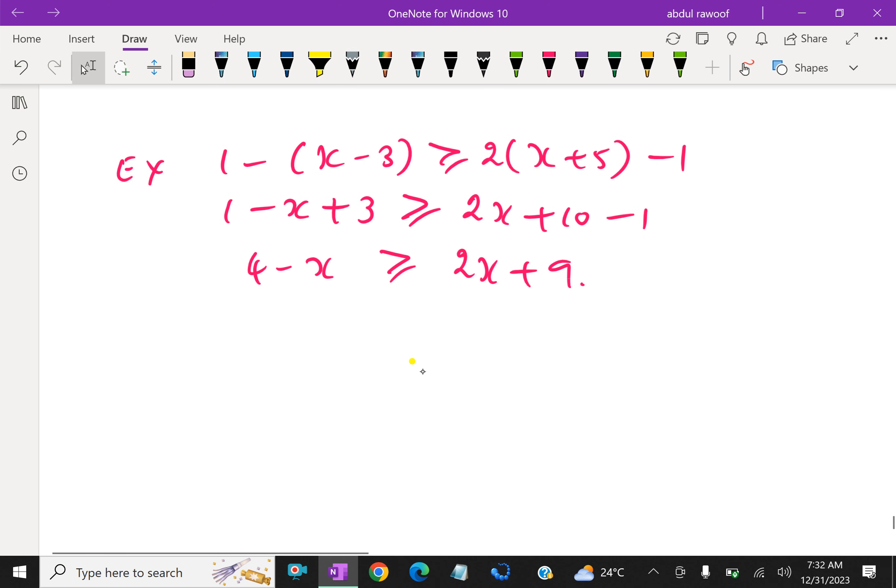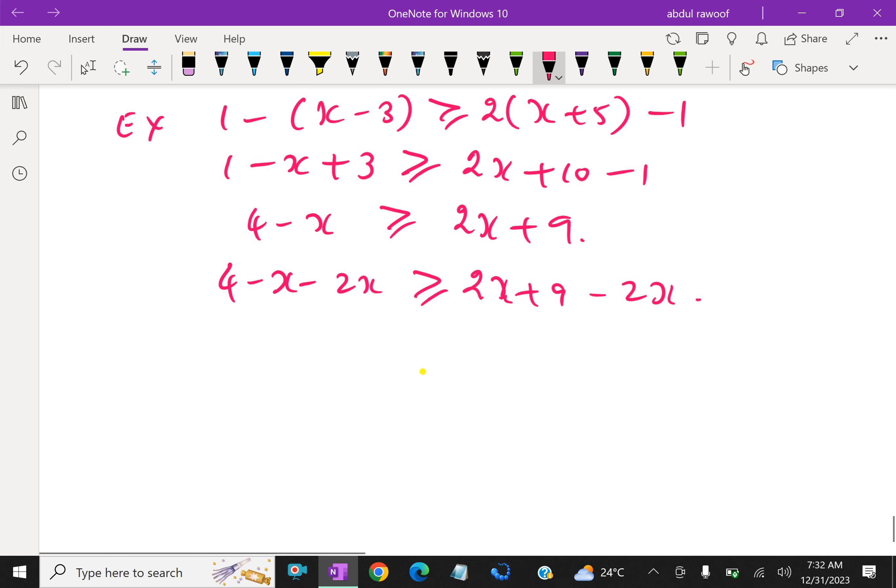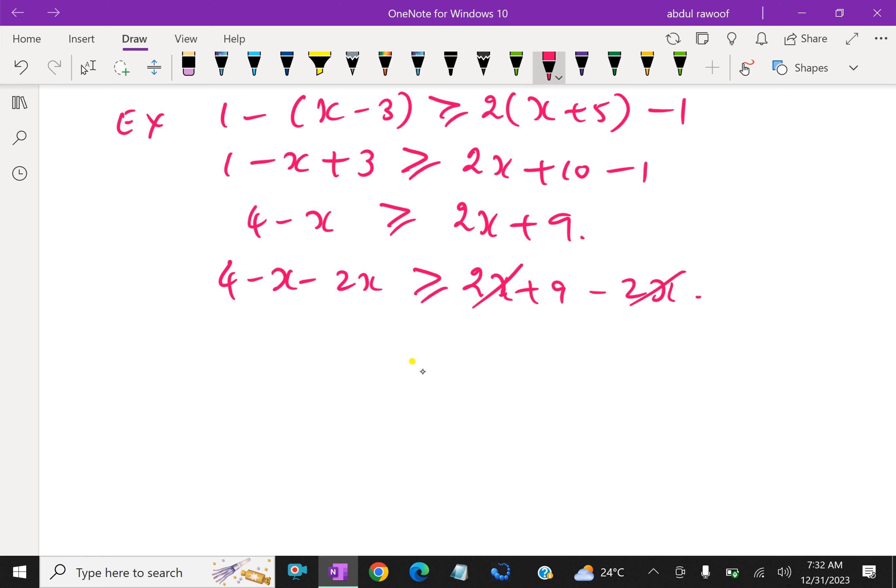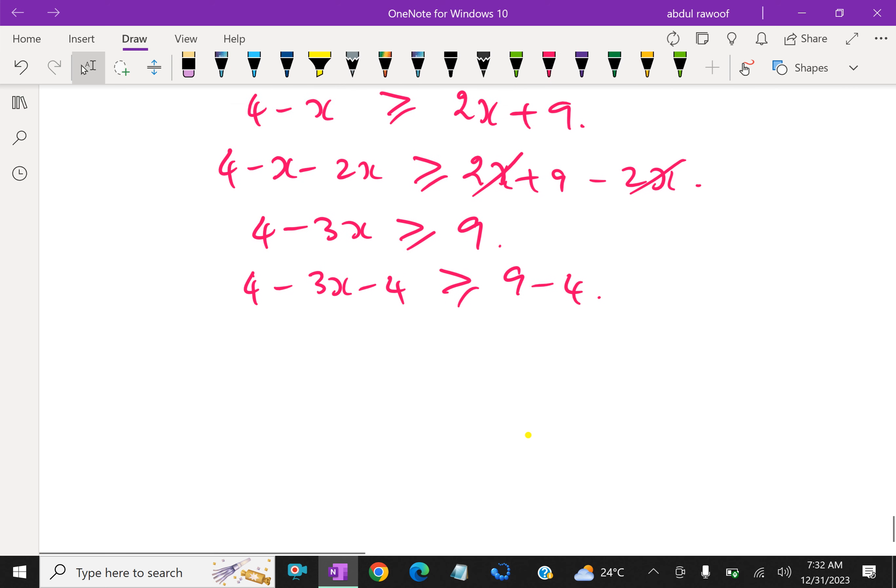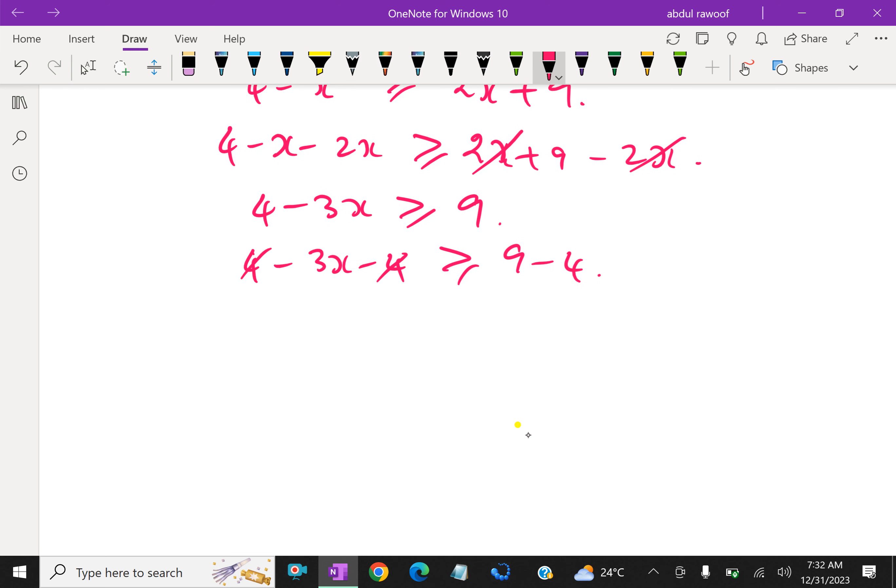So subtracting 2x from both sides. 4 minus x minus 2x, 2x plus 9. So 4 minus 3x, the 2x terms cancel. So 4 minus 3x greater than or equal to 9. Then subtracting 4 from both sides. 4 minus 3x minus 4, 9 minus 4. These cancel. Therefore, minus 3x is greater than or equal to 5.